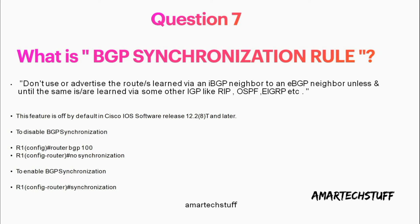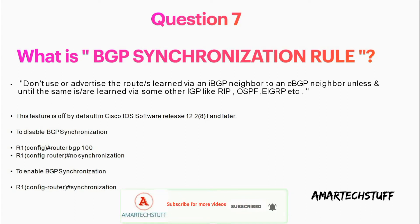Question number seven: what is a BGP synchronization rule? This is a very important question, so always be prepared for this. The answer goes like: do not use or advertise routes learned via an IBGP neighbor to an EBGP neighbor unless and until the same are learned via some other IGP like RIP, OSPF, EIGRP, etc. To have a proper understanding of this rule is very important.